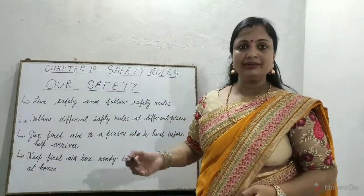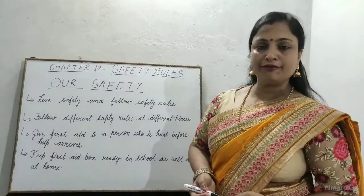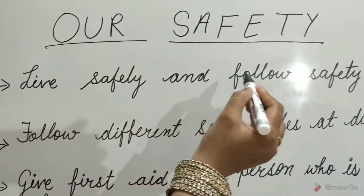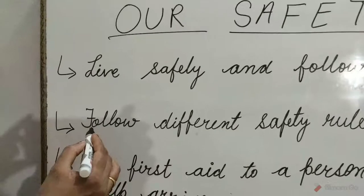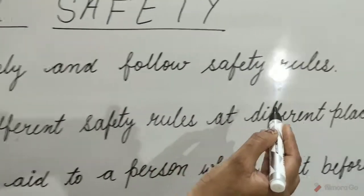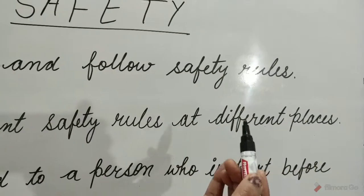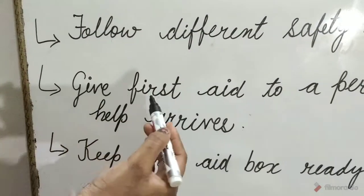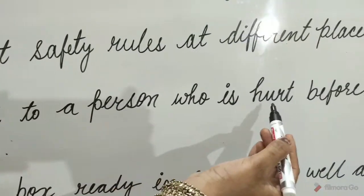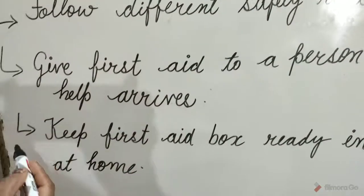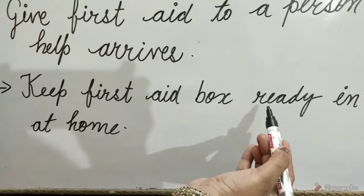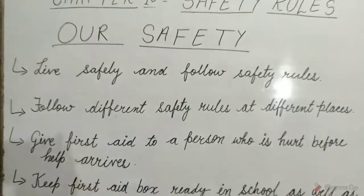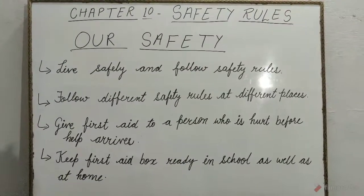Children, here is a flow chart. It will help in following safety rules. Our safety: live safely and follow safety rules. Follow different safety rules at different places such as home, school and on the road. Give first aid to a person who is hurt before help arrives. Keep a first aid box ready in school as well as at home.